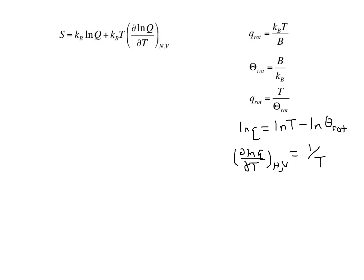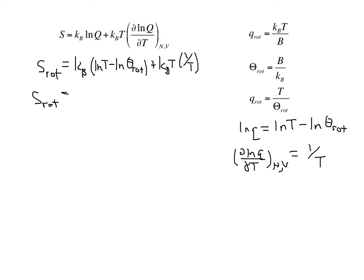Making these substitutions into our equation for the entropy, the rotational entropy is equal to k_Boltzmann times the natural log of T minus the natural log of theta rotations, plus k_Boltzmann times T times 1 over T. So the rotational entropy per molecule is k_Boltzmann times the natural log of T over theta rotation, plus 1.